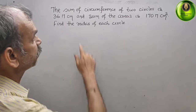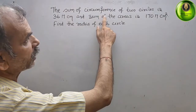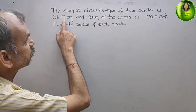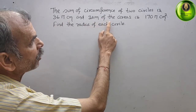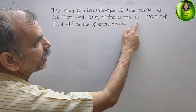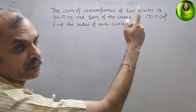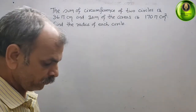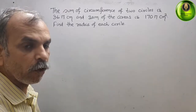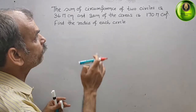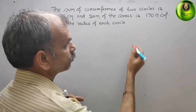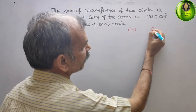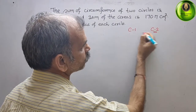The question is: the sum of circumferences of two circles is 36π centimeters and the sum of the areas is 175 centimeters square. Find the radius of each circle. We have two circles — circle one and circle two.